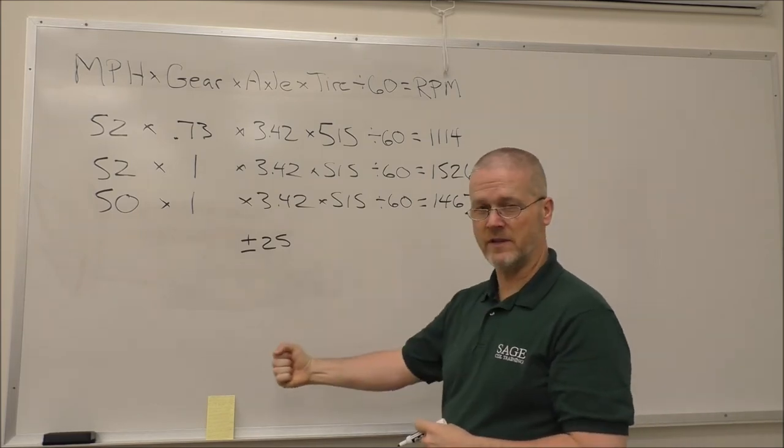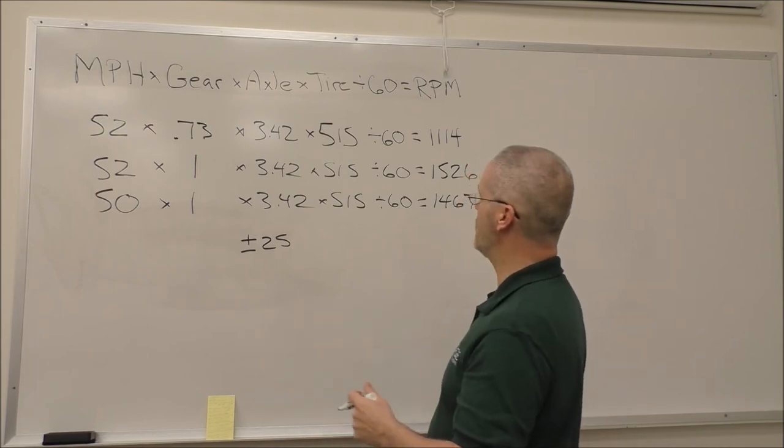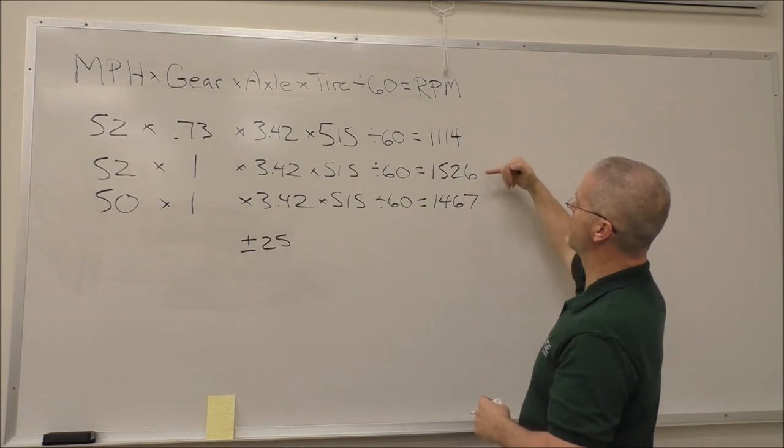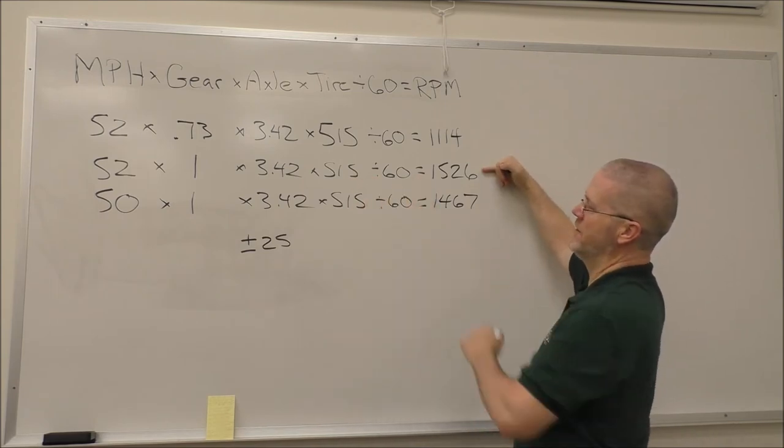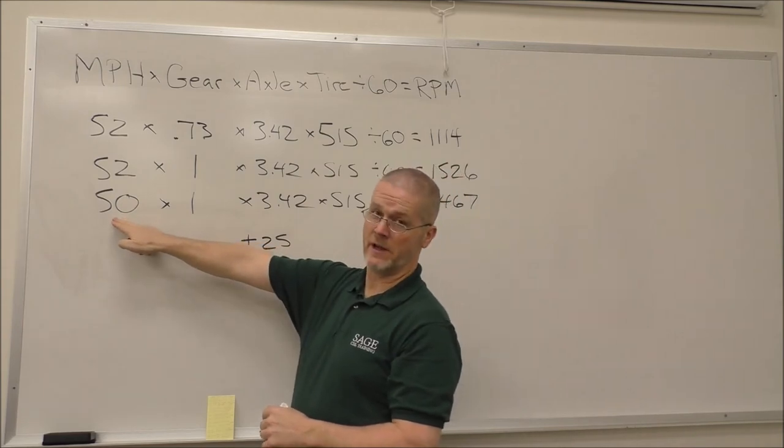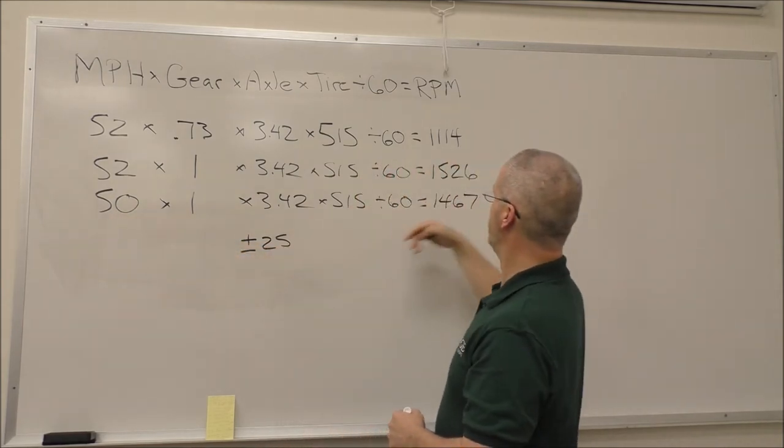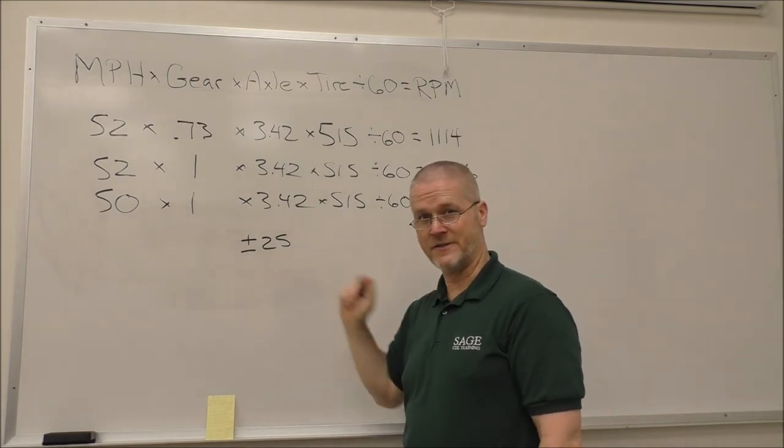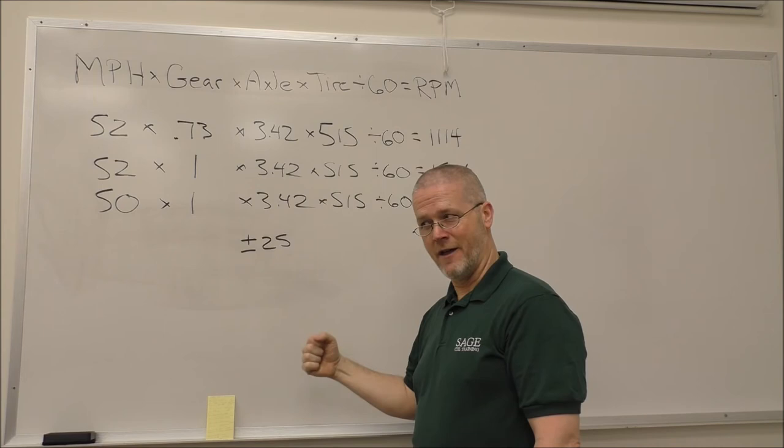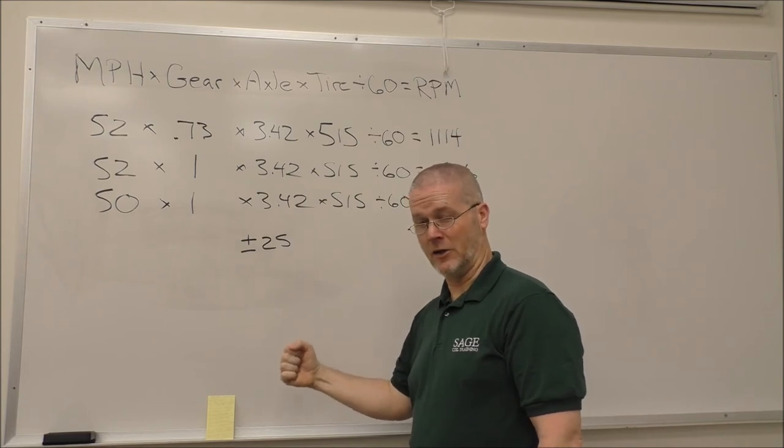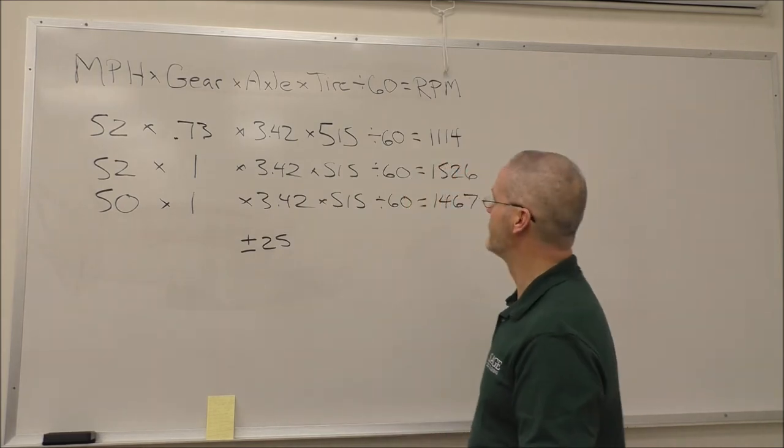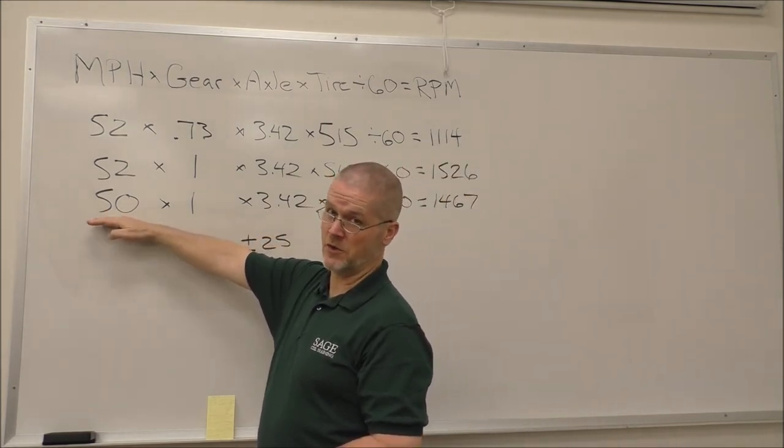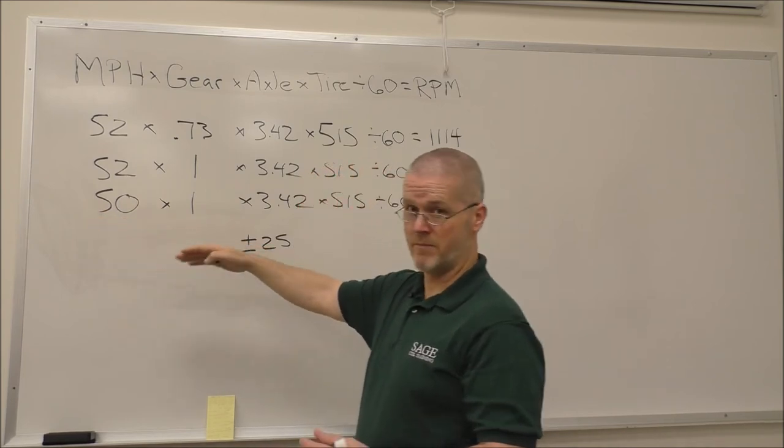But if you hadn't made the correction from this theoretical number to this probably real life number, the difference between 1467 and 1526 is bigger than this. And when you try to go into ninth gear, things will at least get a little crunchy, if not just be impossible. And so you've got to take into account any change in speed that happens during the gear change. That's what makes this interesting.